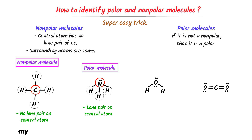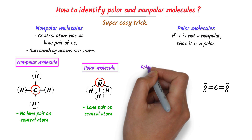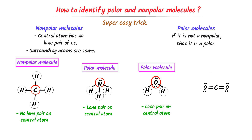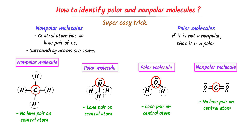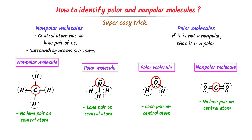In case of this molecule, it is not a non-polar molecule. Although the surrounding atoms are the same, the central atom has no lone pair of electrons — thus it is a polar molecule. Lastly, this molecule is a non-polar molecule because the central atom has no lone pair of electrons and the surrounding atoms are the same. Using this trick, we can easily identify polar and non-polar molecules.